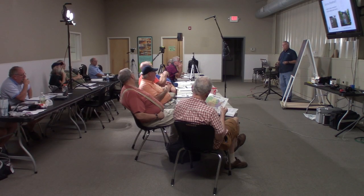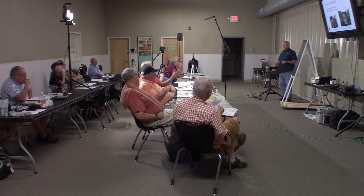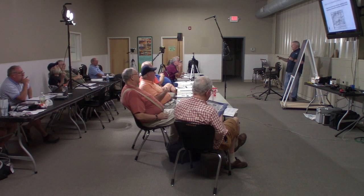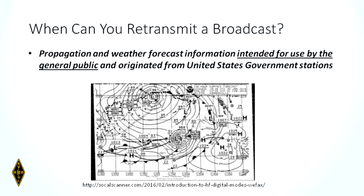When can you retransmit a broadcast? When it's weather forecast information or propagation information intended for use by the general public, and originated from a U.S. government facility. So for example, a weather map downloaded from a U.S. government weather satellite could be rebroadcast on slow scan TV — that would be authorized. That's the only time.